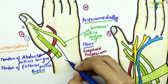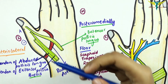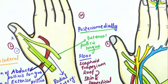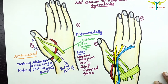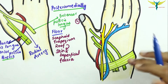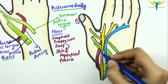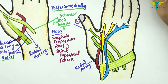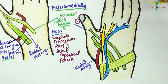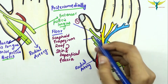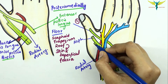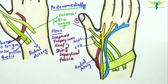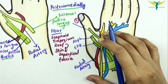Now let's talk about the structures crossing the roof, deep to the skin. In this diagram, this artery is the radial artery. This is the extensor pollicis longus tendon forming the posterior medial boundary, this is the tendon of the abductor pollicis longus, and this is the tendon of the extensor pollicis brevis — these two tendons form the anterior lateral boundary.